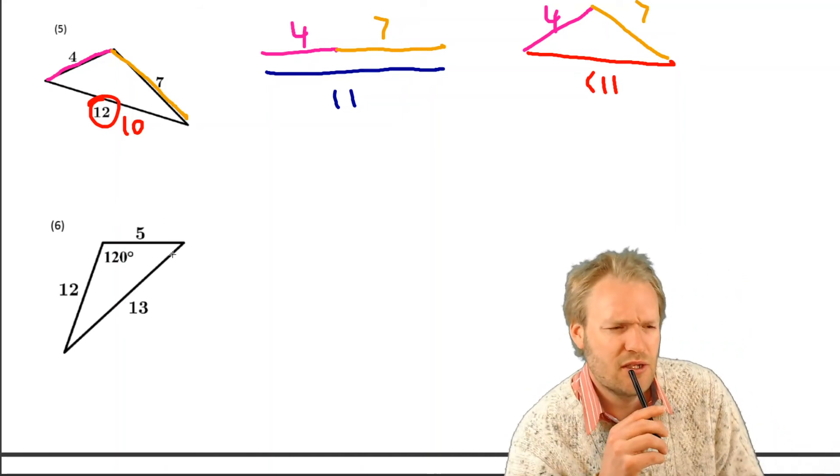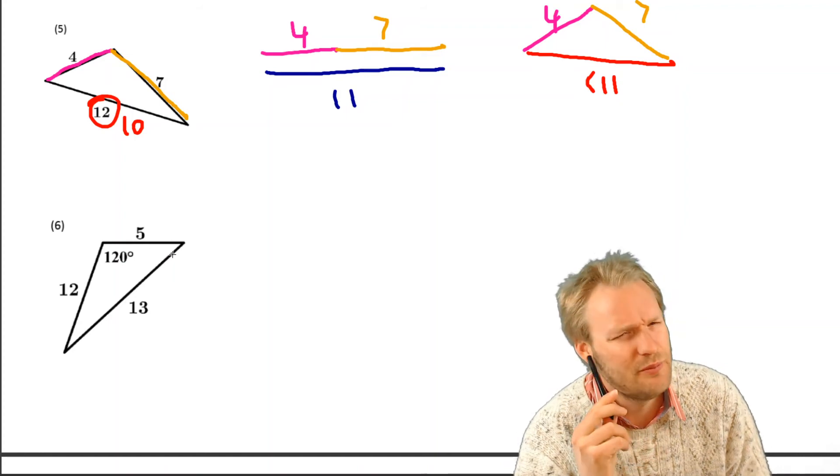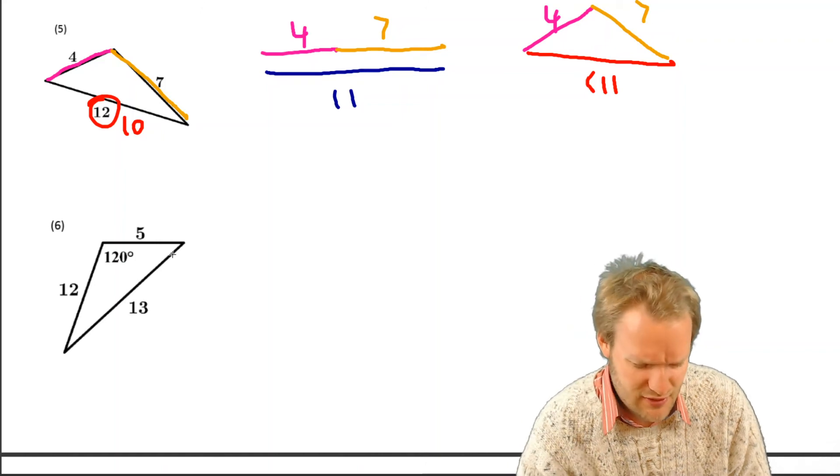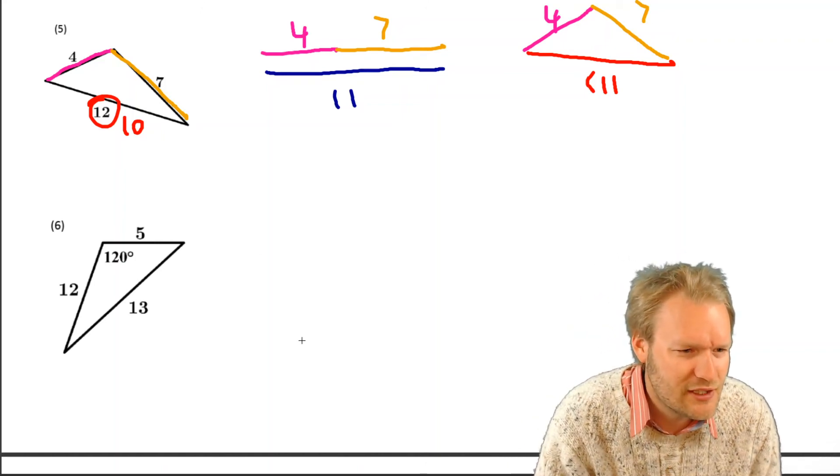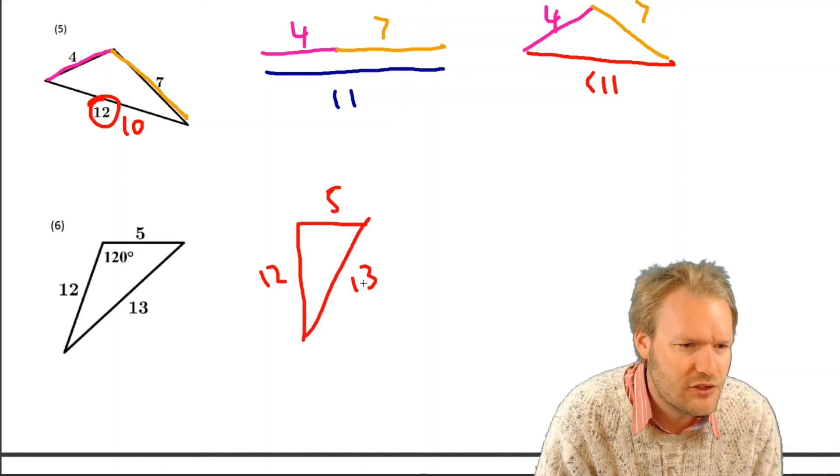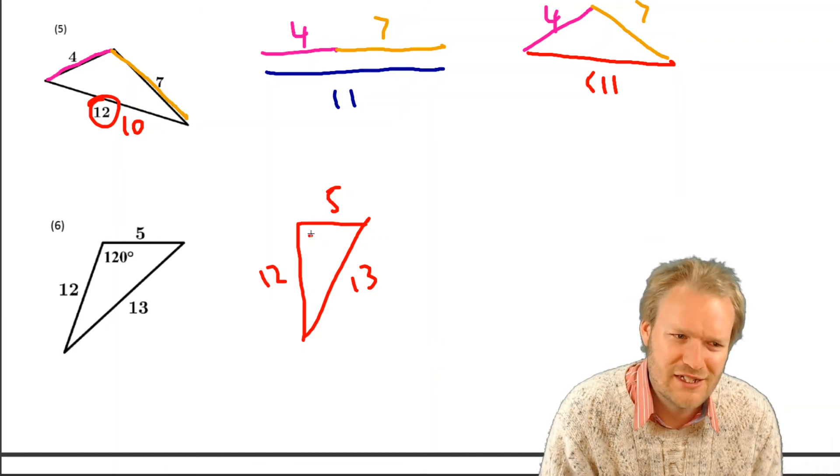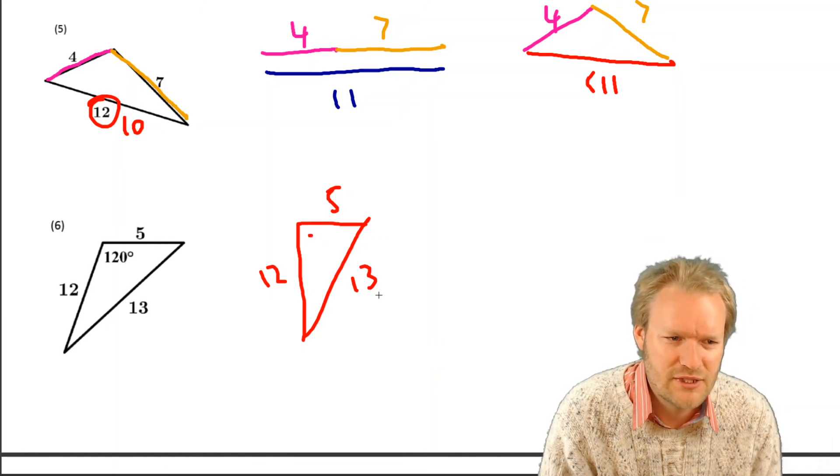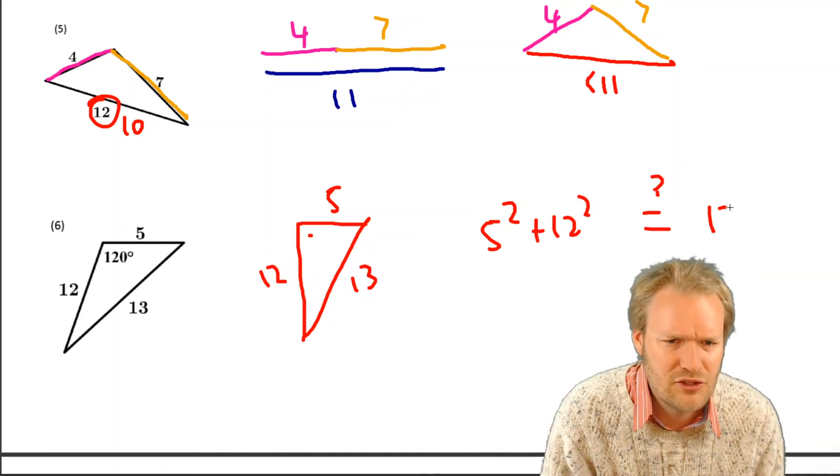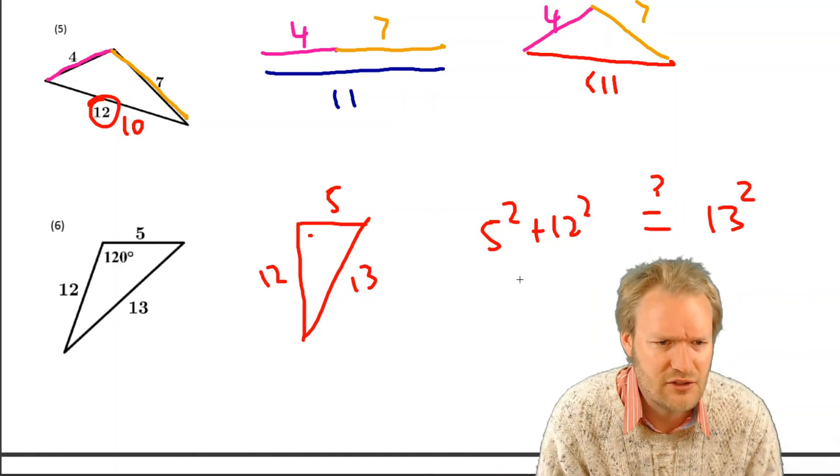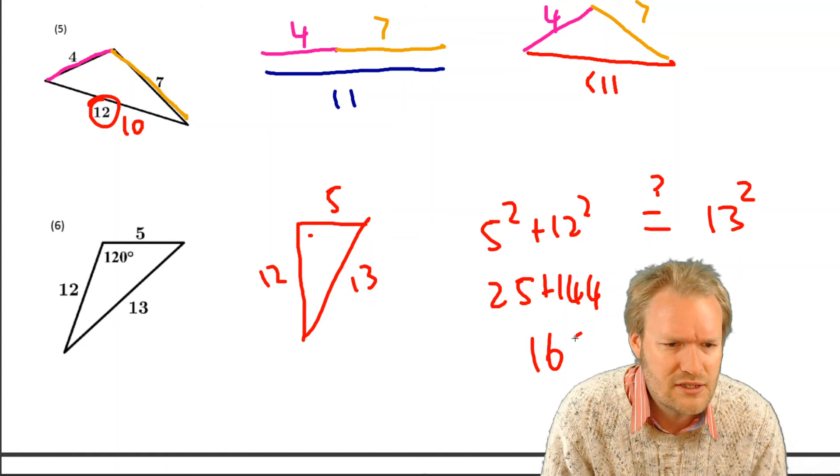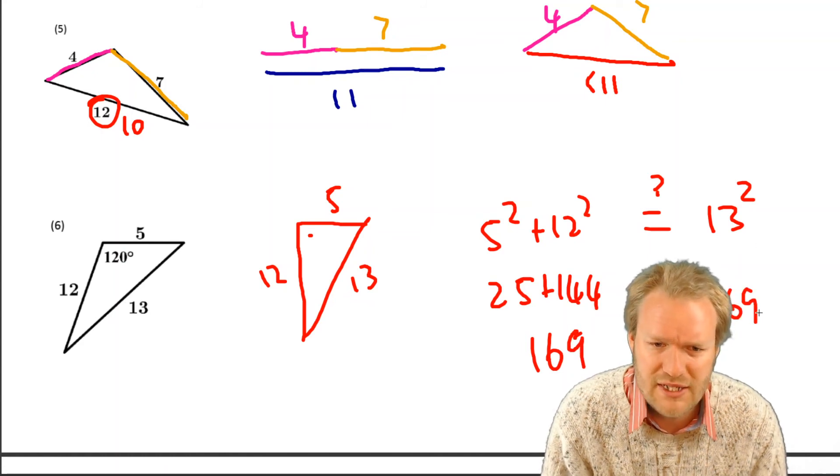But wait, 5, 12, 13 to me. Because I've seen enough of these rings a bell. I feel like I've seen that in like one of those Pythagoras ones. I feel like I've seen a triangle that looks like this. 5, 12, 13. Well, that was a right angle. If that's a right angle, then that squared plus that squared is that squared. Okay. So 5 squared plus 12 squared. Is that equal to 13 squared? If so, then it's a right angle. So 25 plus 144, 169, 13 squared. I know my times tables.